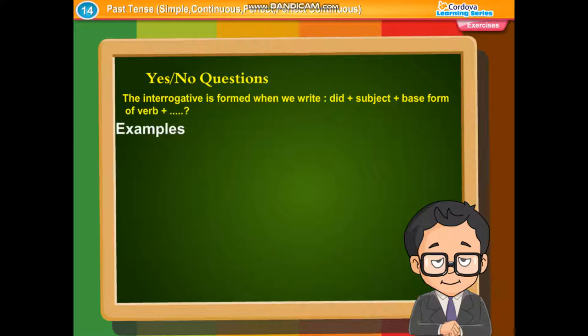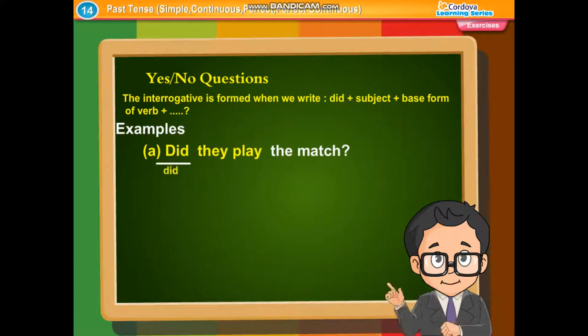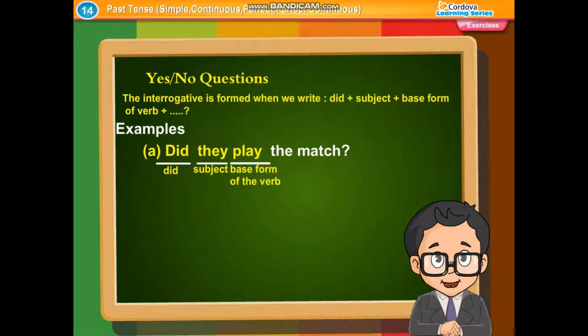Examples. Did they play the match? Here, 'did' is the auxiliary, 'they' is the subject, 'play' is the base form of the verb, followed by the question mark.